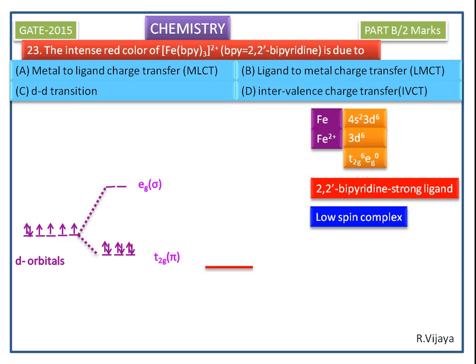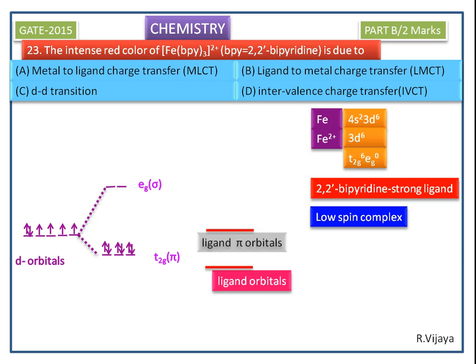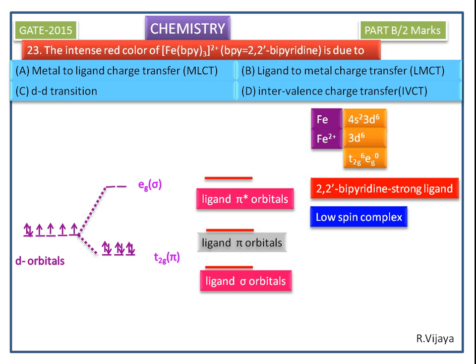Now we look at the ligand orbitals. This ligand has sigma orbitals, pi orbitals, and pi star orbitals. Only the sigma orbitals are filled orbitals; the pi and pi star orbitals are empty orbitals.